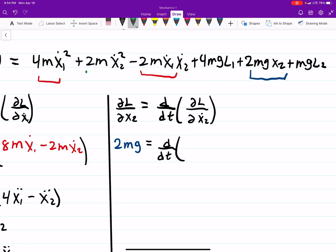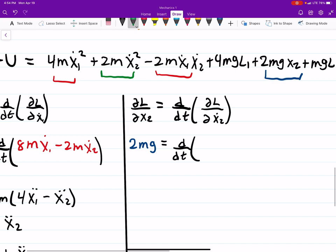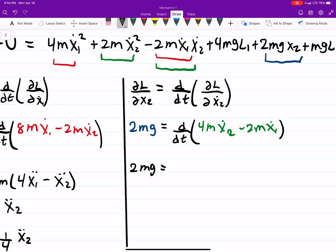And then I'm going to need to take the derivative of, we'll do green, this guy, yeah that guy and this guy again. So I get 4mx dot 2 minus 2mx1 dot. So that's 2mg equals again I'm going to factor out a 2m and then take the time derivative so I get 2x double dot squared minus x1 double dot. Or I can divide these so all I'm doing is taking time derivatives hopefully you guys are okay with that.